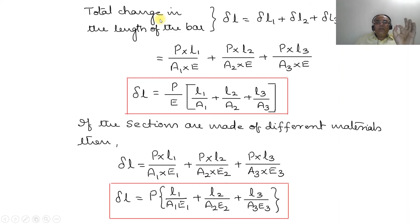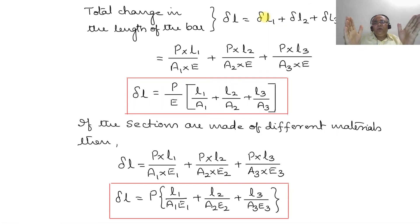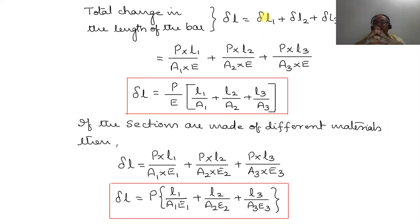The total change in length of the bar is delta_L = delta_L1 + delta_L2 + delta_L3, because all cross-sectional areas carry the same applied tensile load, giving a positive value. Substituting: delta_L = P·L1/(A1·E) + P·L2/(A2·E) + P·L3/(A3·E).